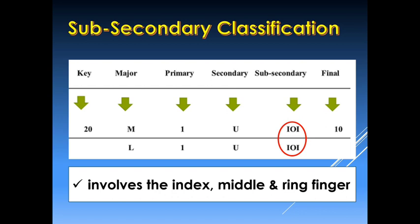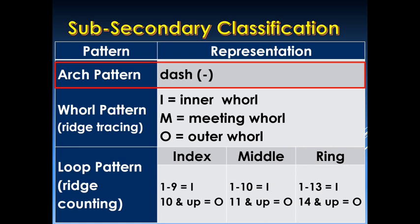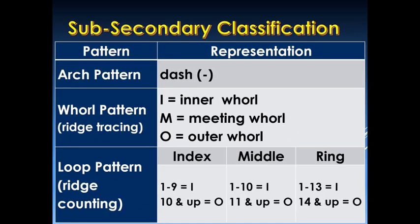Our sub-secondary classification is placed on the right side of the secondary classification. For the arch pattern, whether that is a plain arch or a tented arch, we are going to simply put a dash. Now if it is a whorl pattern, we are going to simply copy the ridge tracing which is placed on the upper right portion of each fingerprint block. The I stands for inner whorl, M for meeting whorl, and O for the outer whorl.